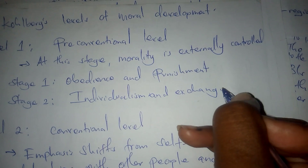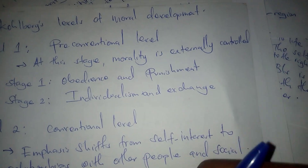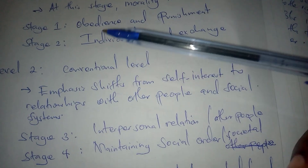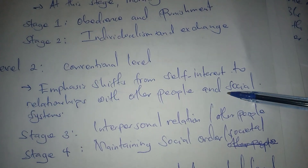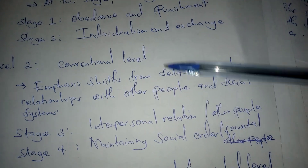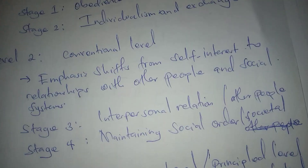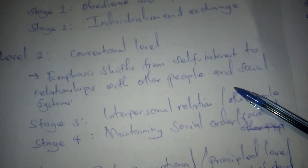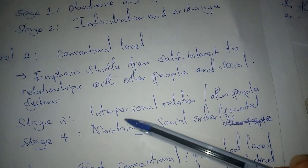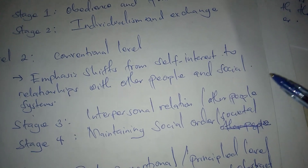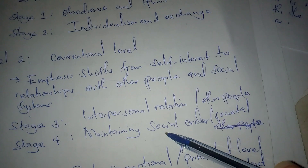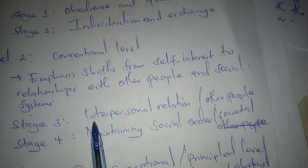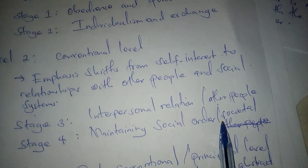In stage two, you obey just to serve your own self-interests. The second level is the conventional level, where the emphasis shifts from self-interest to relationships with other people and society systems. It has stages three and four: stage three is interpersonal relations — the relationship with other people — and stage four is maintaining social order, which relates to society systems.